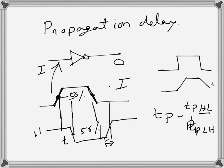This delay when changing from high to low will be tPHL. And when changing from low to high, this one will be tPLH. These two can be different.